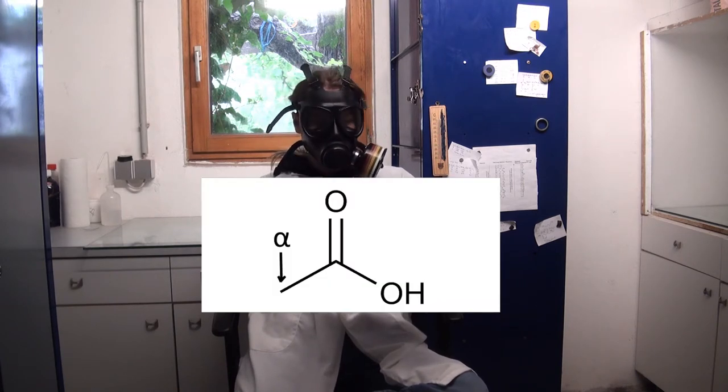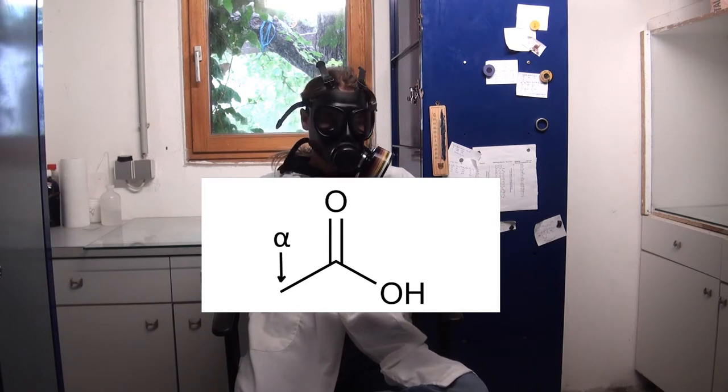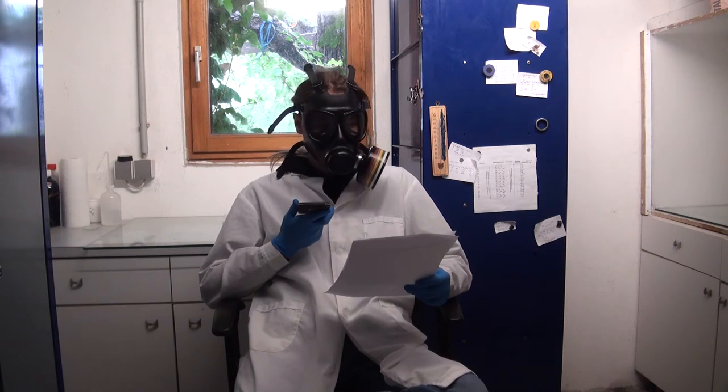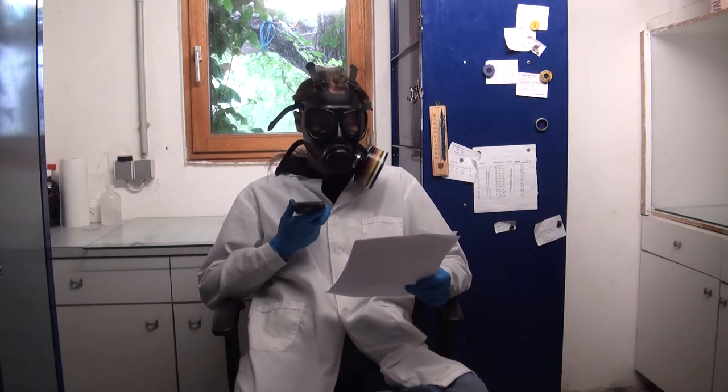Chloroacetic acid is made by chlorinating acetic acid on the alpha position. This is usually not very easy, therefore a catalyst has to be used.